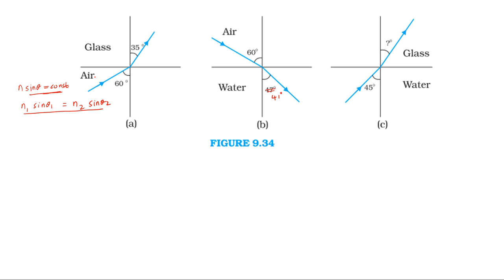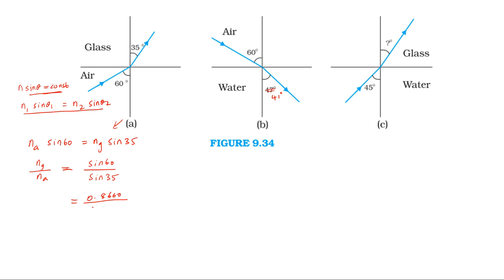First case, from diagram A: refractive index of air into sin 60 equals refractive index of glass into sin 35. Therefore, refractive index of glass by refractive index of air equals sin 60 divided by sin 35, which is 0.866 divided by 0.5735, giving the refractive index of glass with respect to air as 1.509, rounded to 1.51.